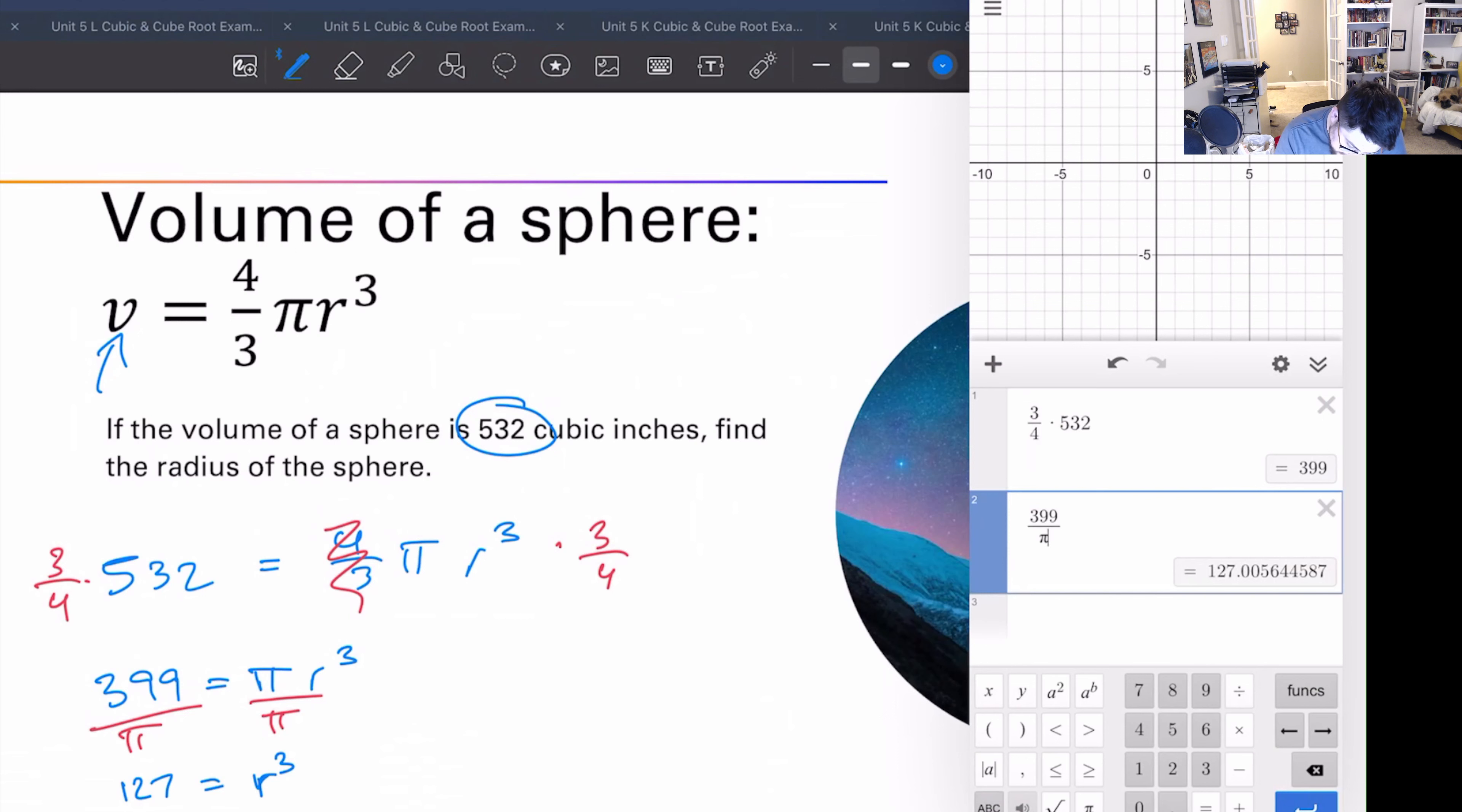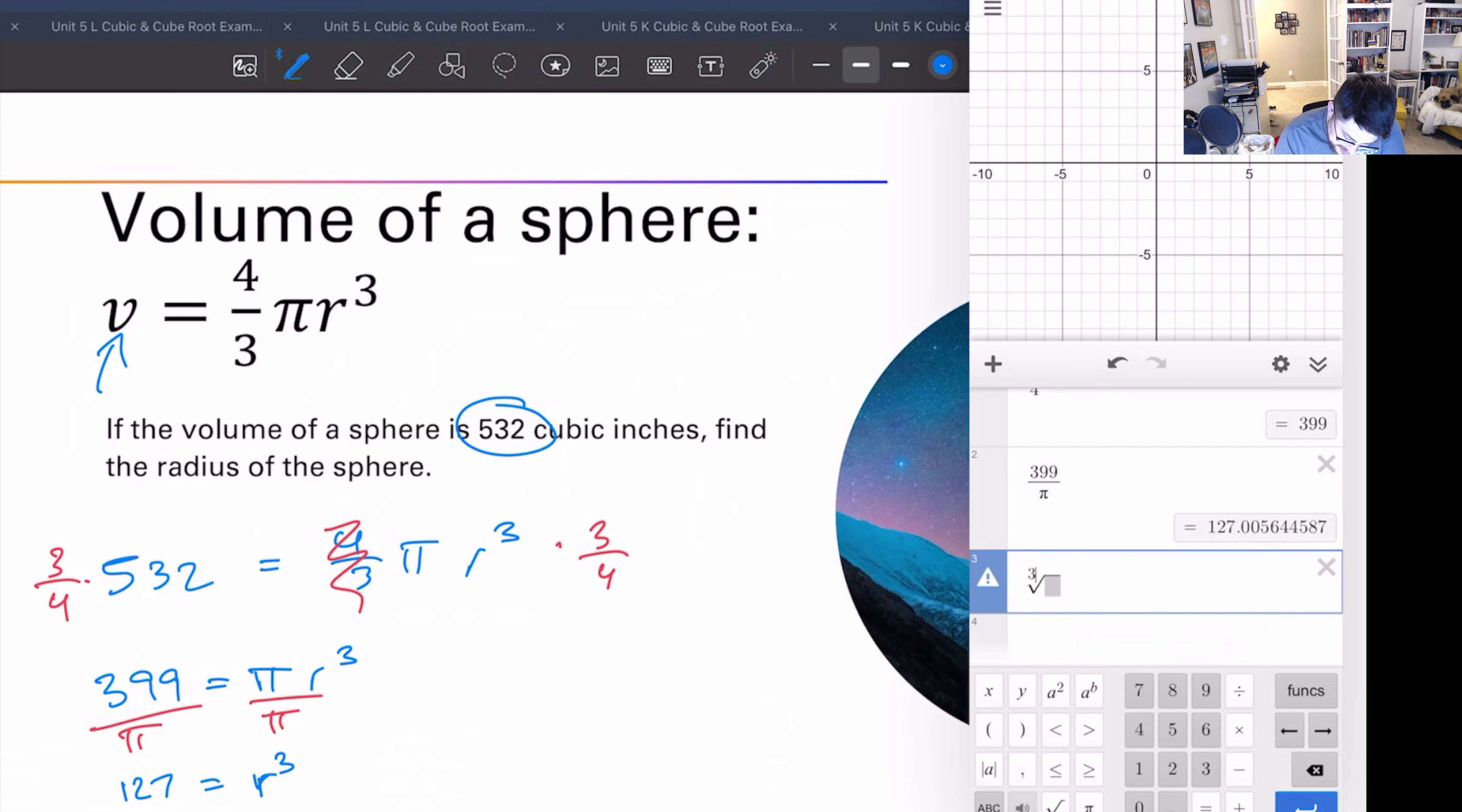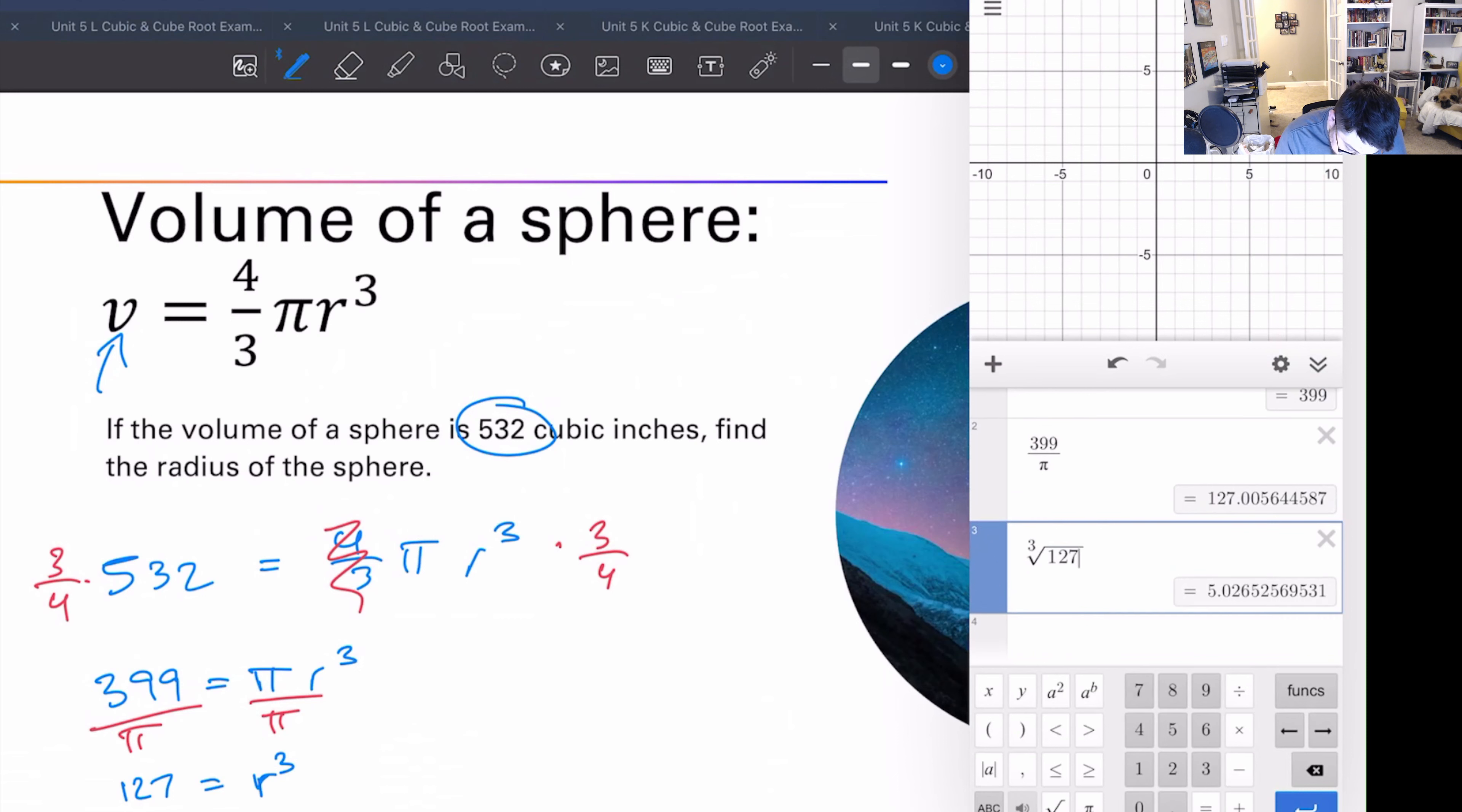So let's take all of that and let's cube root. So what we can do is we can do function, scroll to the bottom and select this button, and we do three, to the, copy that, copy. Nope, I wish.